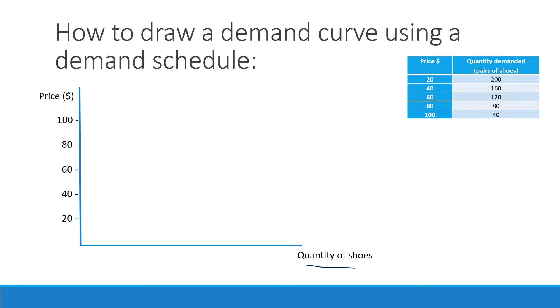The next step after that is to actually plot your points and plot your intervals along the axes. So obviously looking at this demand schedule, we can see that the price goes up in intervals of 20, and we can see that the quantity demand of shoes goes up in intervals of 40.